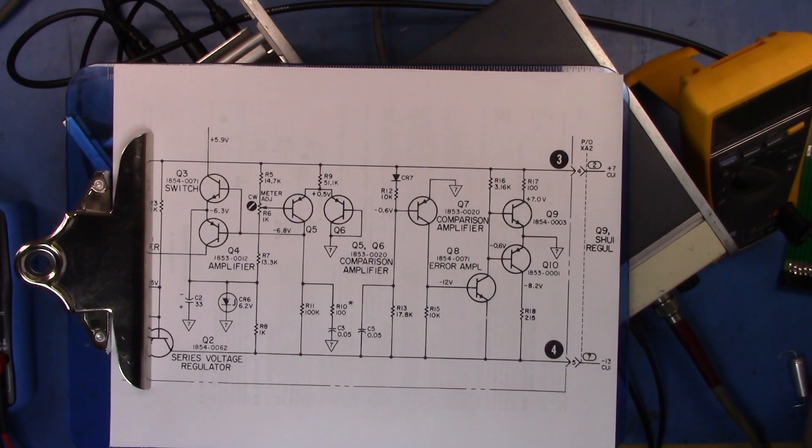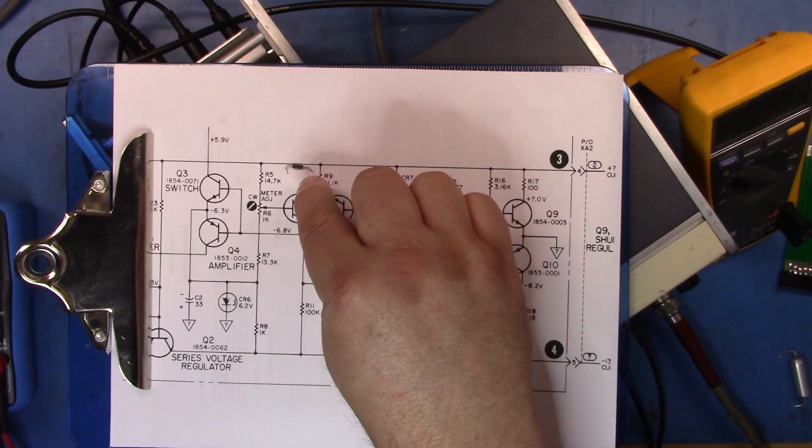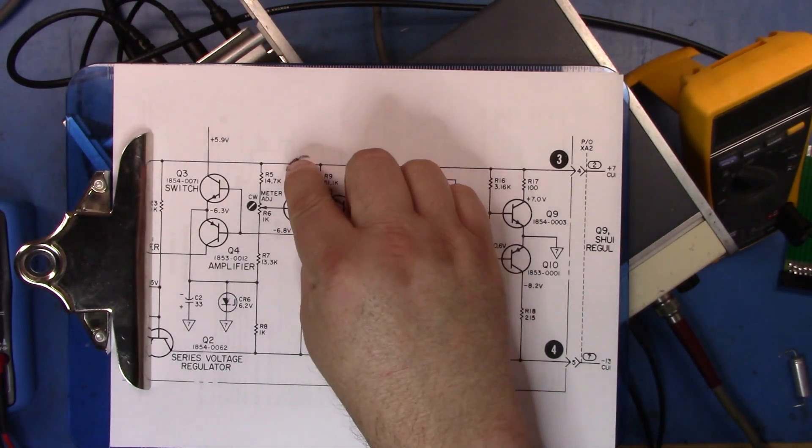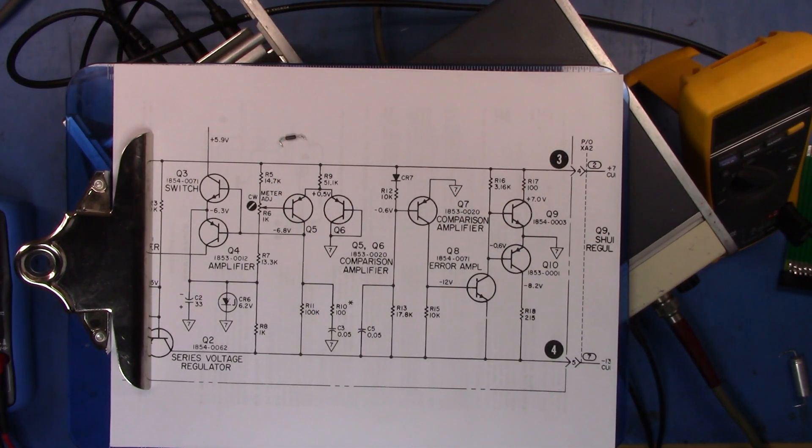And that's what I did and I discovered that R5, which was this guy here, had actually gone much higher. It's supposed to be a 14.7K resistor but it had actually risen to about 16, 16.5K.